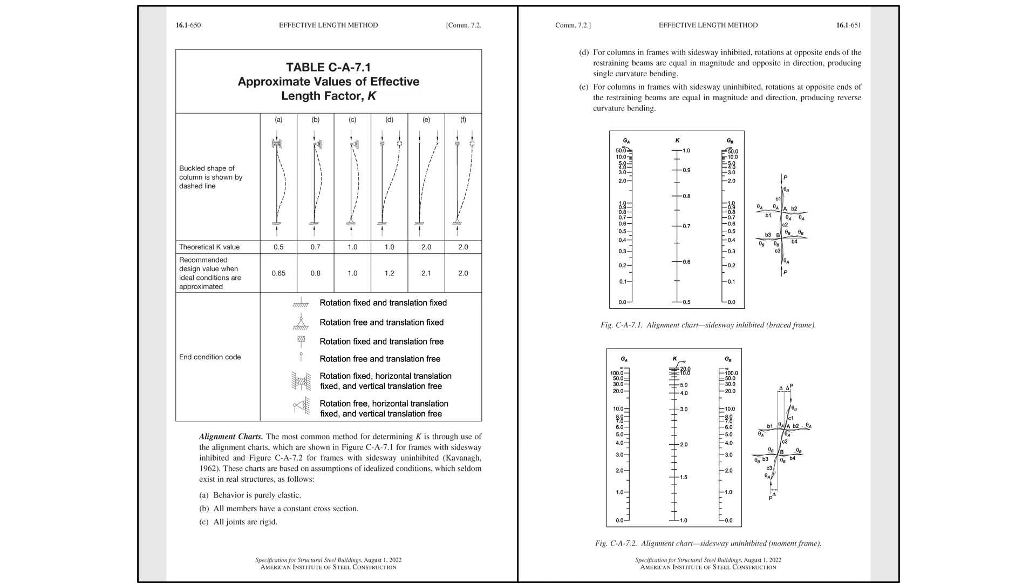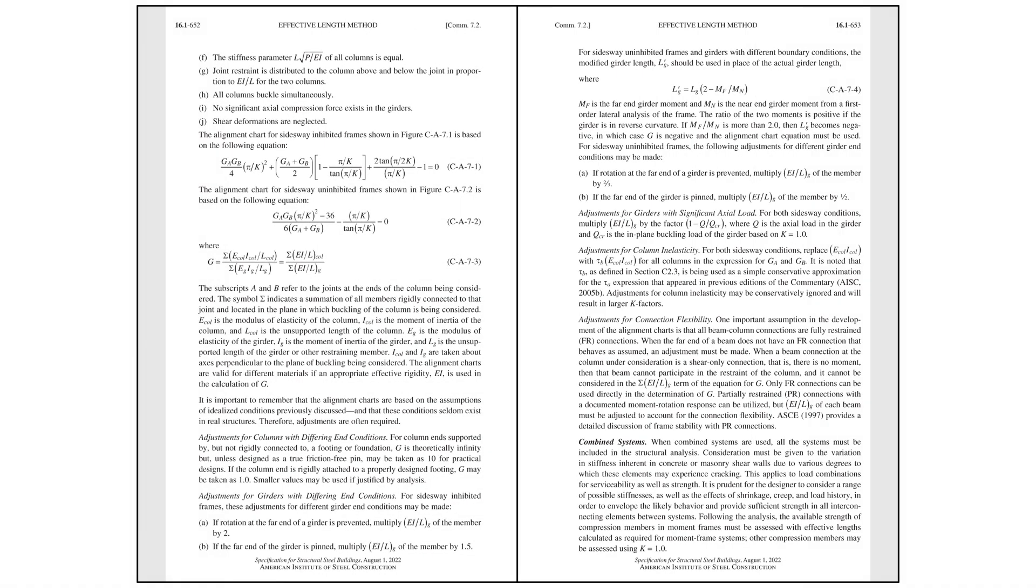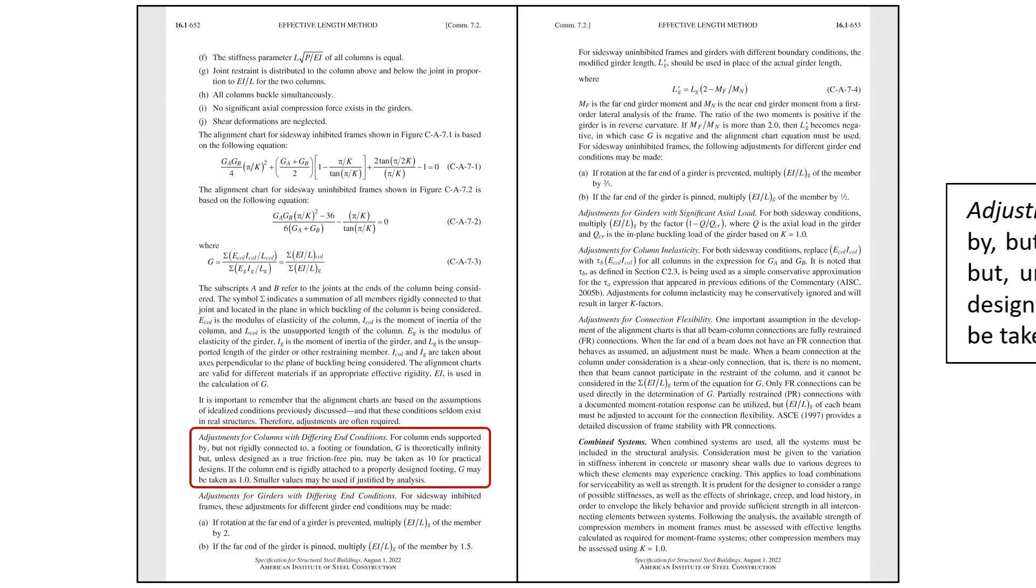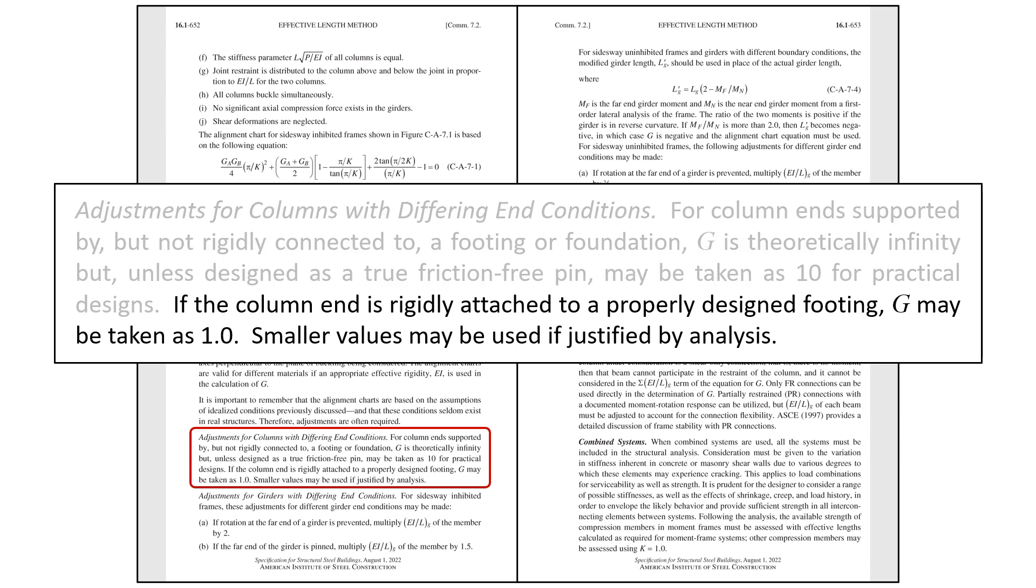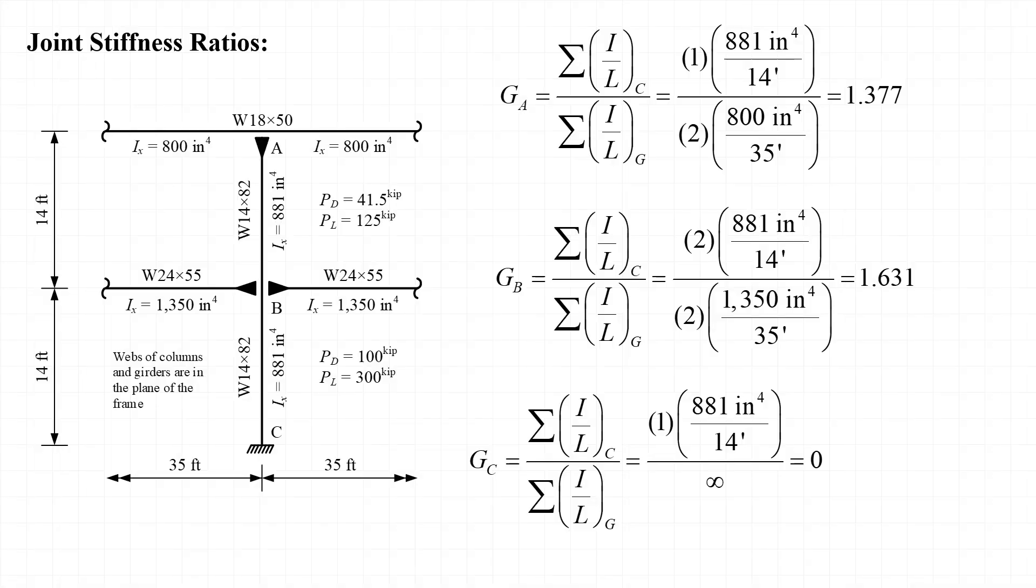The effective length method is covered in Appendix 7 of the 2022 edition of the AISC specification. The alignment charts that we're going to use to determine the effective length factors are found in the commentary to Appendix 7. If we read through that commentary, we can find that the cases of pinned and fixed bases are addressed directly. Specifically, the commentary says that if the column end is rigidly attached to a properly designed footing, G may be taken as 1.0. Smaller values may be used if justified by analysis. In our case, we know only that the column base can be treated as fixed, so we'll take G as 1.0 for joint C.